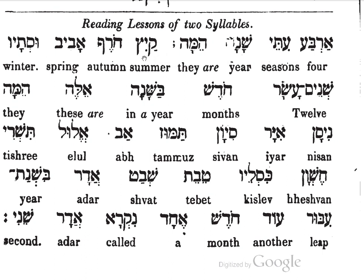Kaitz — summer. Kaitz. Khurref — autumn. Khurref. Abib — spring. Abib. Ustav — and winter. Ustav.